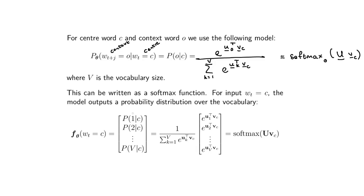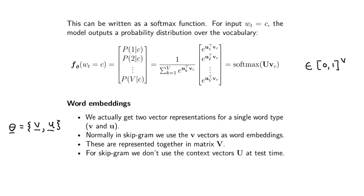The softmax is an enormous vector where each element is between zero and one, there are capital V elements in that vector, and if you sum up all the elements you get one.